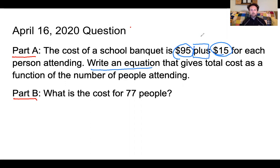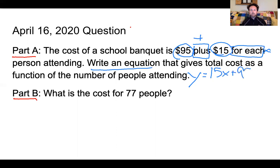It's $95 plus $15 for each, which tells me I am multiplying. I'm going to write my equation in slope-intercept form using y and x. So if the cost is y, then y equals 15x plus 95, because the total cost is $95 plus $15 for each person.